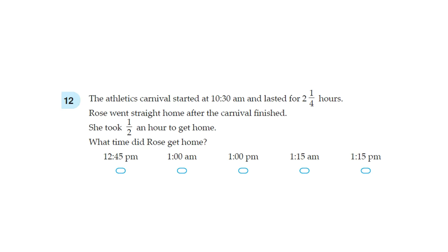Number 12. The Athletics Carnival started at 10:30 am and lasted for 2.25 hours. Rose went straight home after the carnival finished. She took half an hour to get home. What time did Rose get home?